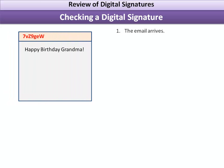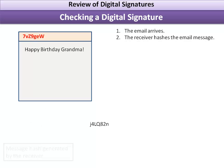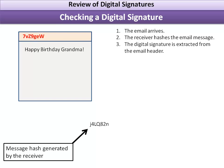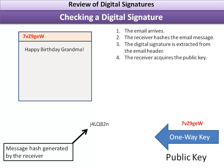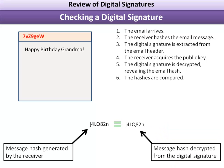When the email arrives and we want to check the digital signature, the receiver takes the same hash algorithm and hashes the email message to produce their own message hash. The digital signature is pulled out of the header, and we acquire the corresponding public key — in DKIM's case, retrieved from the domain name system. We decrypt the hash from the signature and compare the two hashes. If they match, we know that the sender actually sent this message.